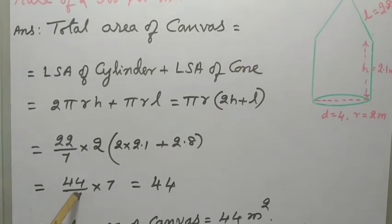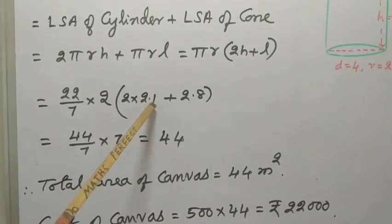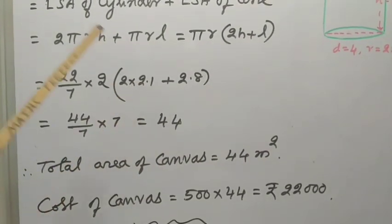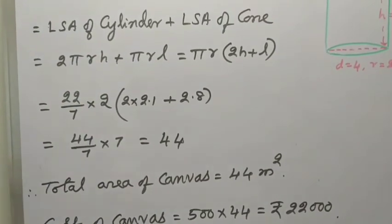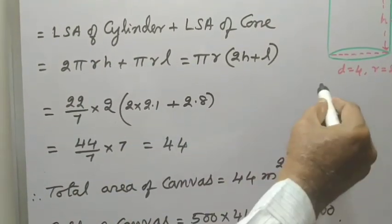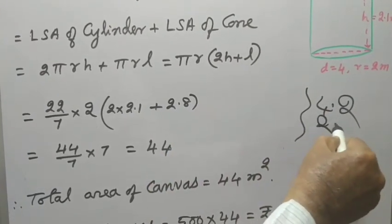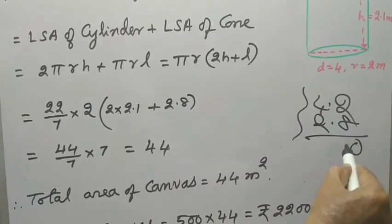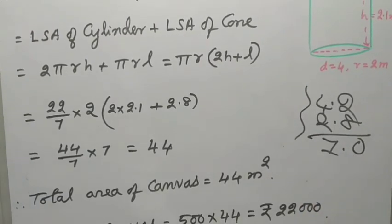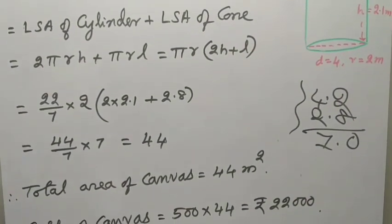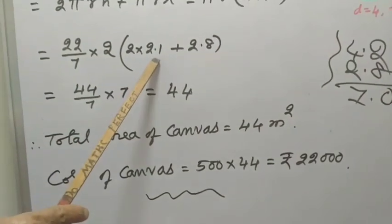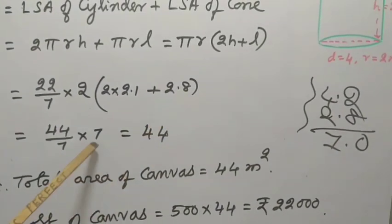Now, 2 into 22, 44 divided by 7 into, see observe this, 2 into 2.1, that is 4.2. Now, this is 2.8, we can use. So, 7, therefore, product of 4.2 plus 2.8 equal to 7. 7, 7 cancels, we get the area 44 meter square, that is total surface canvas.